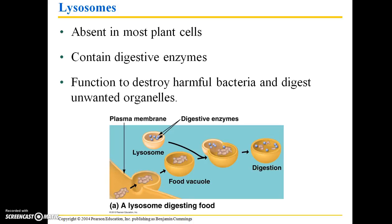Moving on to lysosomes — they are absent in most plant cells. They contain digestive enzymes and function to destroy harmful bacteria, as well as to digest unwanted organelles. For example, if a cell is dying and has reached the end of its lifespan, it might be digested by lysosomes. Or if there is damage to cells, the damaged parts can be recycled by breaking them down with digestive enzymes. You can think of a lysosome as being like a little stomach.